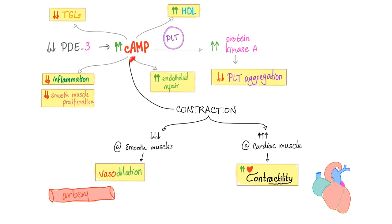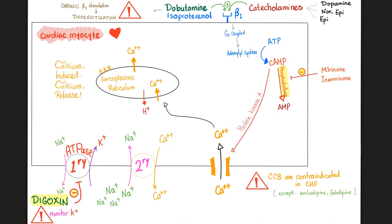Here are all the functions of cyclic AMP. Cyclic AMP in the platelets decreases platelet aggregation, also through protein kinase A. Cyclic AMP can increase your good cholesterol and decrease your triglycerides. It can decrease inflammation, decrease smooth muscle proliferation, and increase endothelial repair. When it comes to contraction, it depends on the tissue: increased contraction in the heart, decreased contraction in smooth muscle.